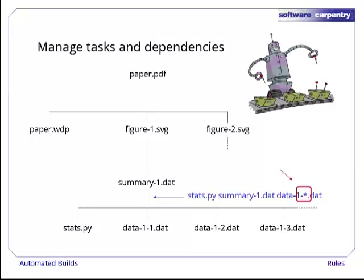In the previous episode, we saw how to use automatic variables and wildcards to handle any number of files with names matching certain patterns. We still have a lot of redundancy in our MAKE file, though. The rules for figure1.svg and figure2.svg are identical except for the 1 and 2 in their names, as are the rules for summary1.dat and summary2.dat.